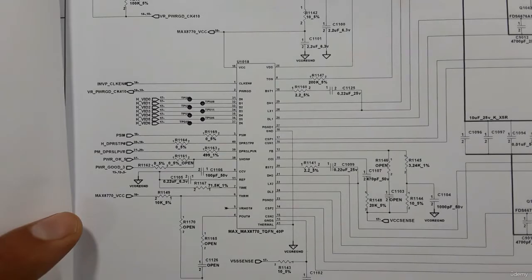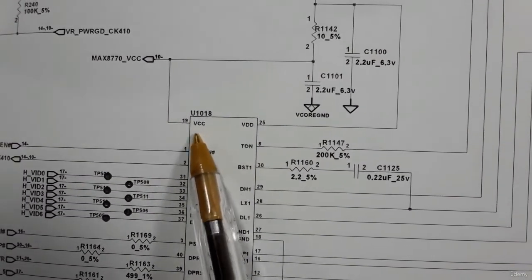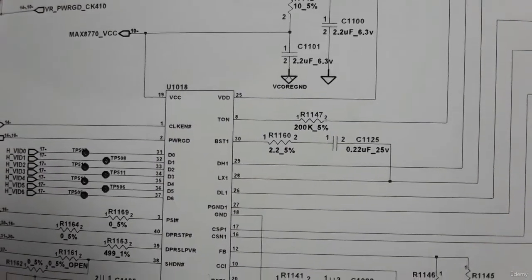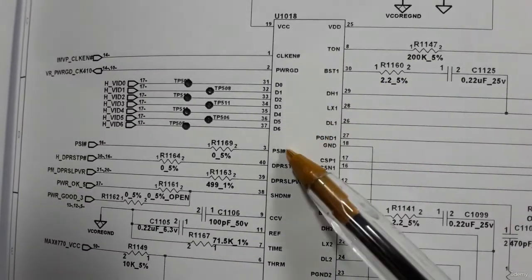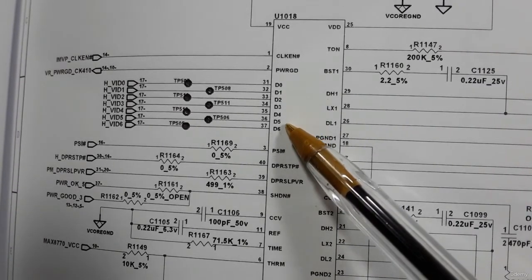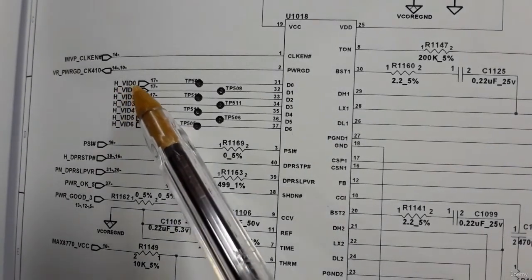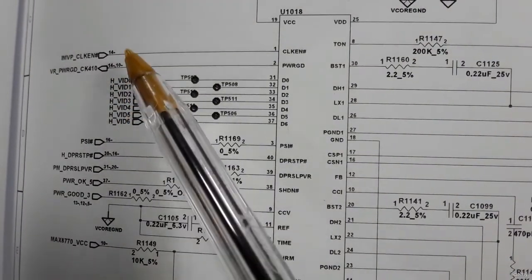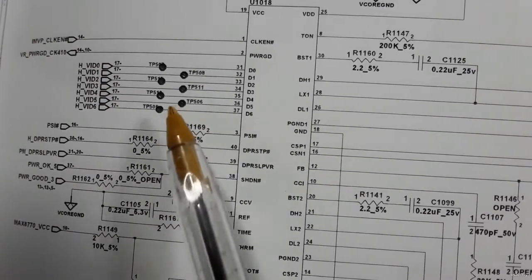Looking at the pin configuration of the CPU power management IC, we have VCC core. The input to produce VCC for the CPU is always 19 volts. There are seven VID signals: VID0, VID1, VID2, VID3, up to VID6 — that's seven VID signals. What is the purpose of these VID signals?